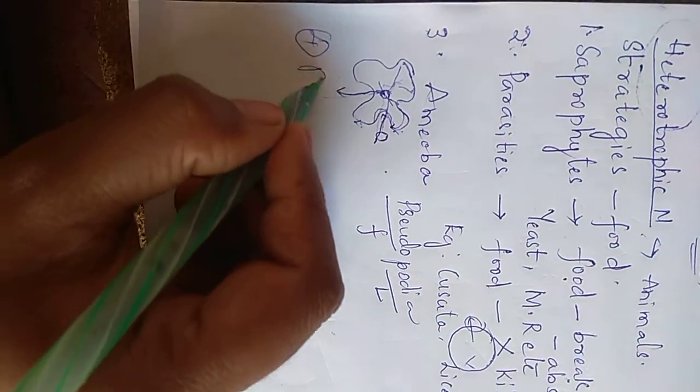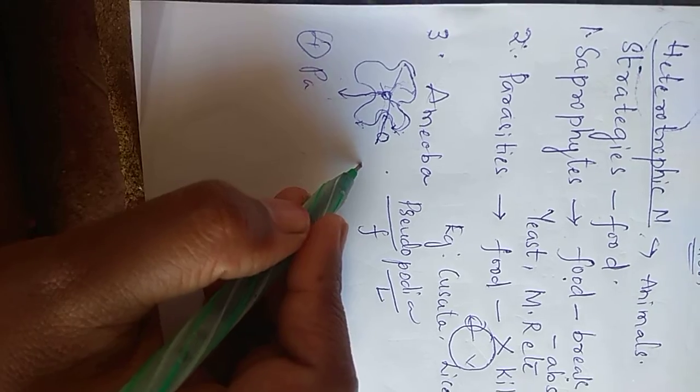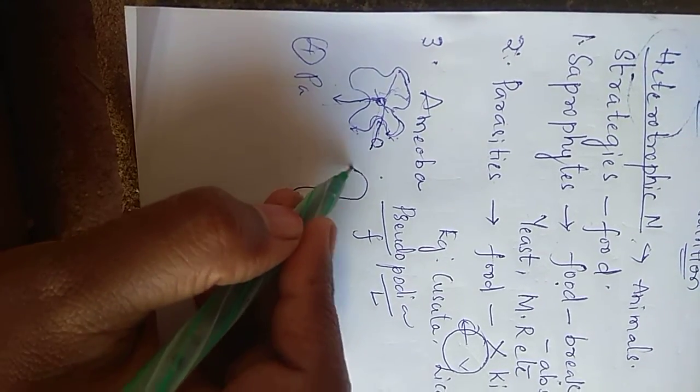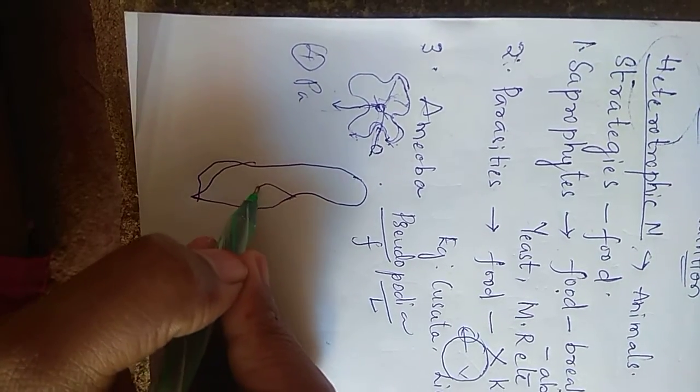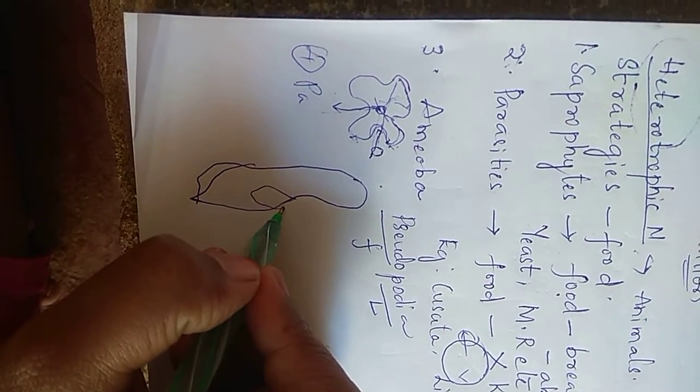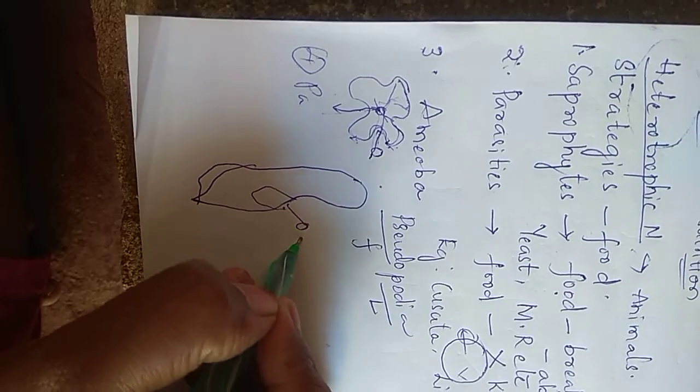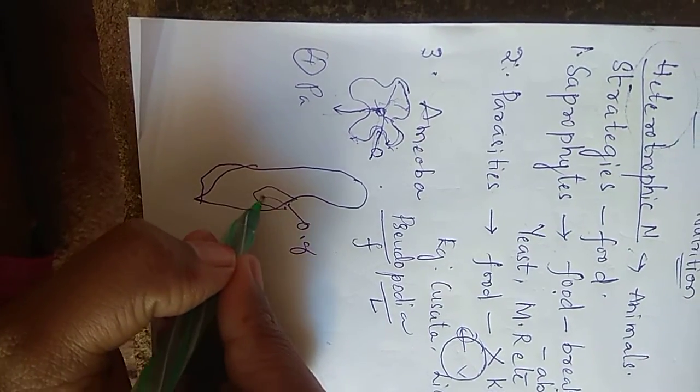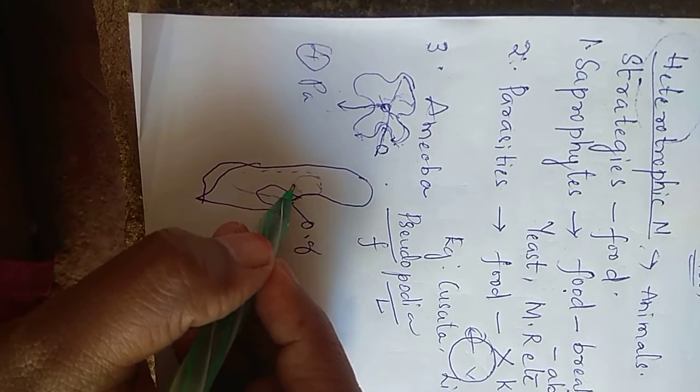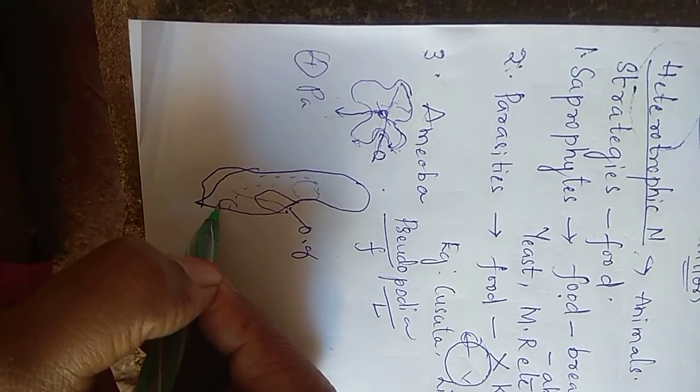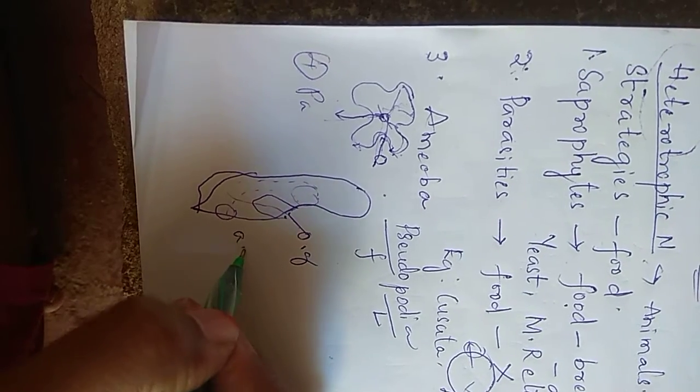Next, paramecium. Paramecium is a slipper-like structure. Here it has one separate part called oral groove. From the oral groove it will take food. It will absorb the food, and after absorbing it will send it from a separate part called anal pore.